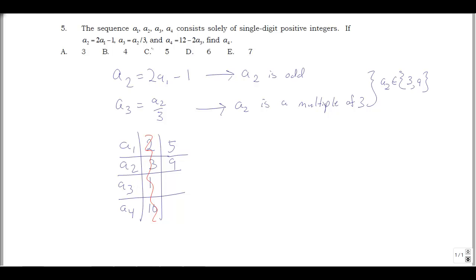Let's go through that. A3 is A2 divided by 3, so 9 divided by 3, that's 3. And then A4 is 12 minus 2 times A3, 12 minus 2 times 3, that's 12 minus 6, so that gives me 6. So my answer here is D6.